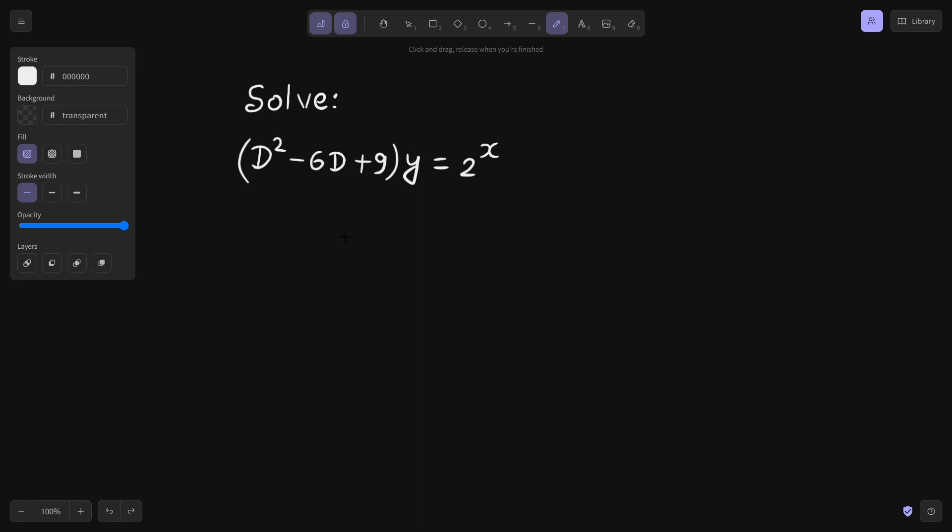But first let us find the auxiliary equation which is needed for complementary function. The auxiliary equation will be just replace this d by m, so m square minus 6m plus 9 and equate it to 0.